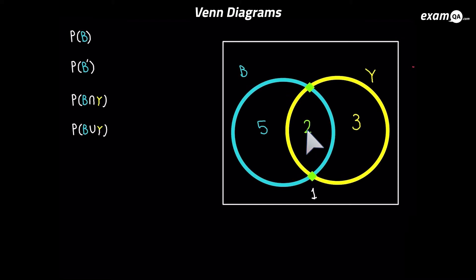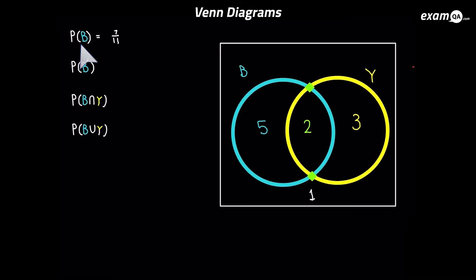In total that's 7. Now if P wasn't there, we'd simply say 7 and that would be the answer for B. But since it wants the probability of B, we need to give it as a fraction — 7 over something. It's going to be 7 over 11, because the total we have is 11. So the probability of being in B is 7/11.